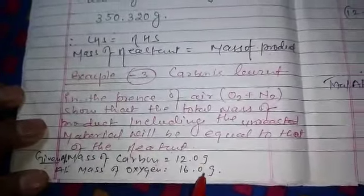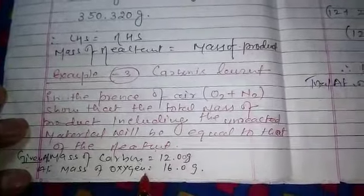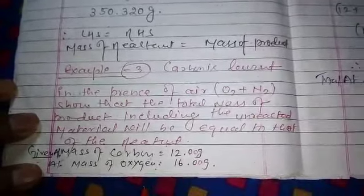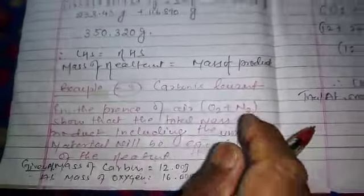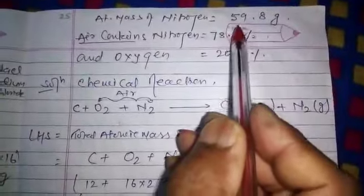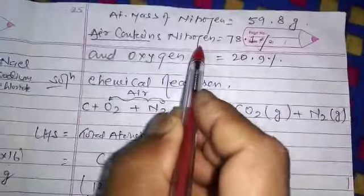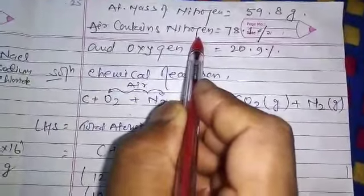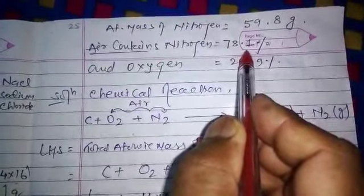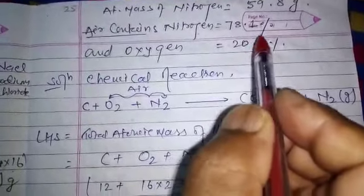Now the atomic mass of nitrogen is equal to 59.8 gram. Air contains nitrogen—nitrogen in air is 78.1 percent, and the oxygen is 20.9 percent approximately.